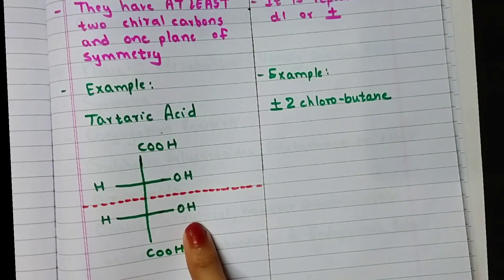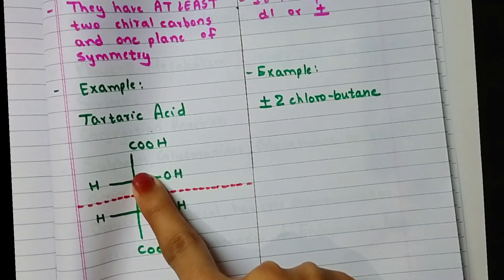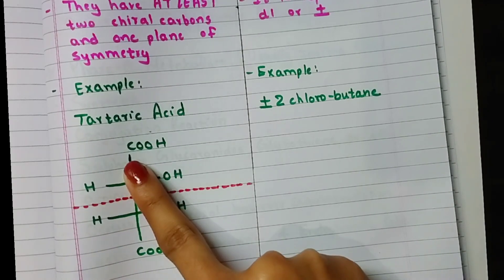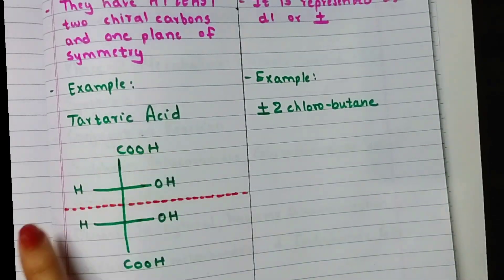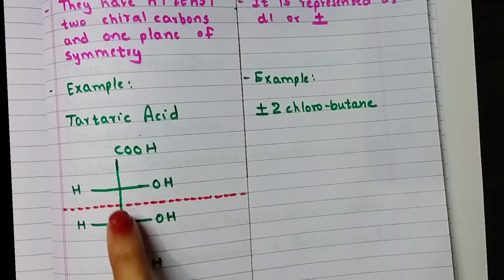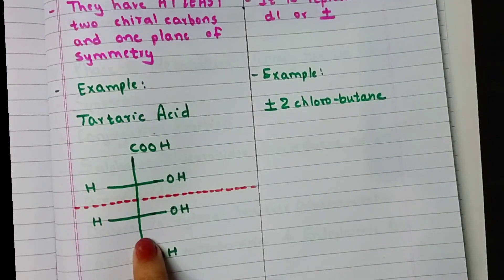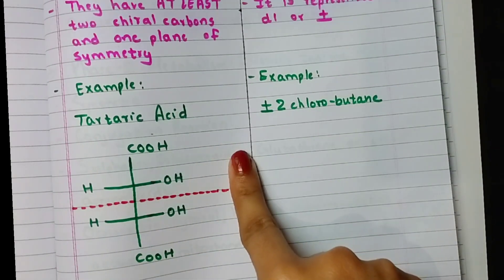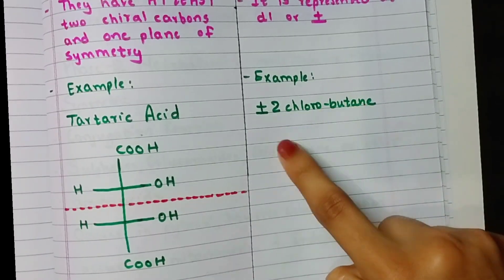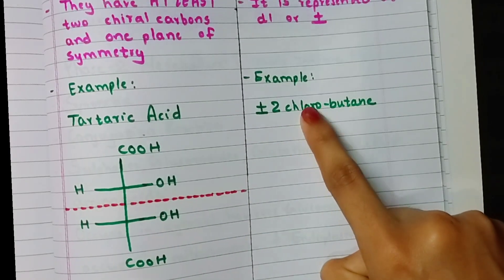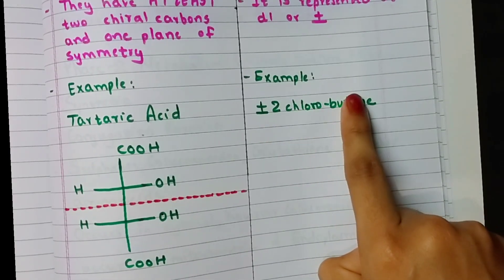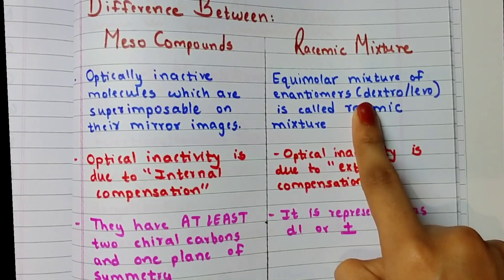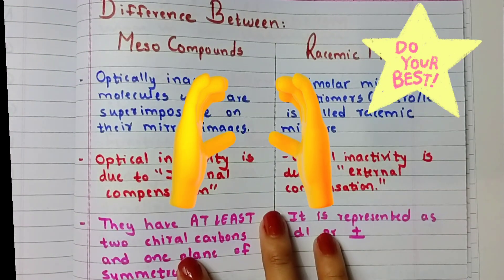For example, meso-tartaric acid has one chiral carbon here and another chiral carbon here — both belonging to one molecule. Within the molecule, the optical activity of both chiral carbons is nullified by each other, so it is called a meso compound — internal compensation. For racemic mixture, 50% dextro and 50% levo 2-chlorobutane together is called the racemic mixture of 2-chlorobutane.